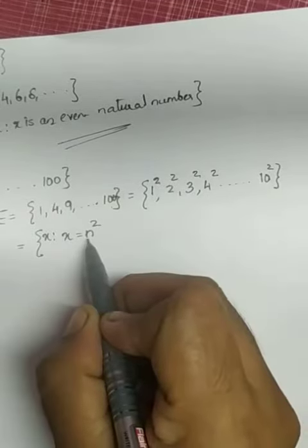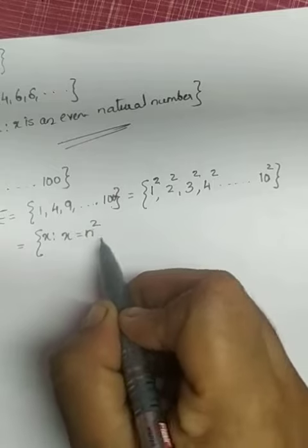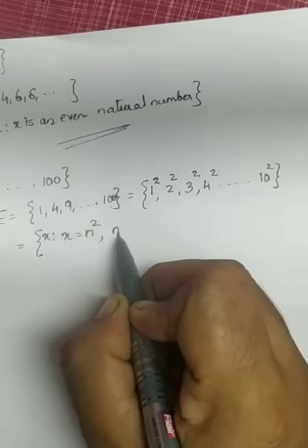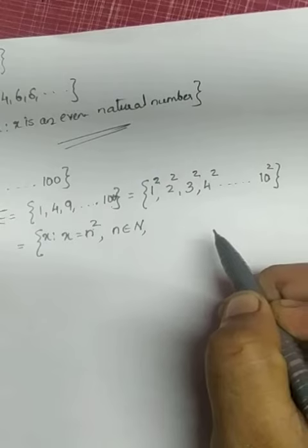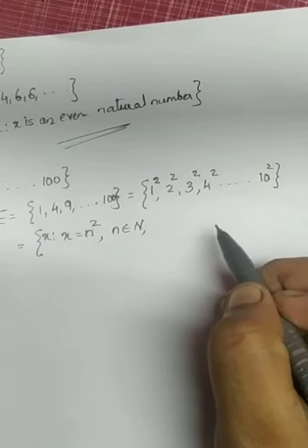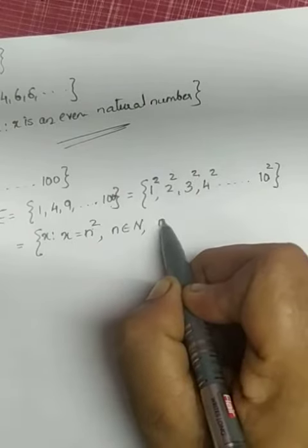n is a natural number. Not only natural number - it is a number less than 11. So n < 11, otherwise you can write n ≤ 10. Natural number means it starts from 1.